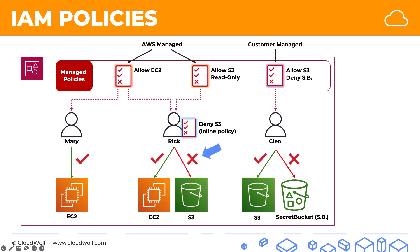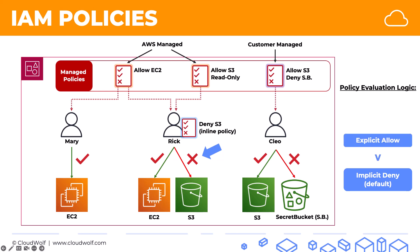Here we'll see an interesting situation where Rick has two policies attached: one allows S3 read-only access and one denies S3 access. So what will win — the allow or the deny? This is where the policy evaluation logic is important. Always, there is an implicit deny by default, so everything is denied unless it's explicitly allowed. Once there is an explicit allow — like we had initially, or in Mary's case who wouldn't normally have access to EC2 — an explicit allow overrides the implicit or default deny.